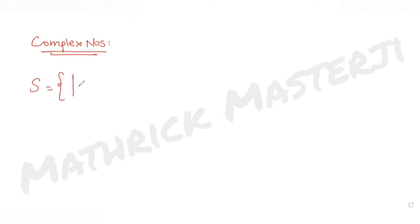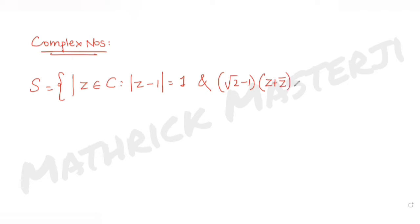Hi guys, I hope you are all doing well. Today's question is from the topic of complex numbers. The set S consists of complex numbers z such that |z - 1| = 1, and the second condition is |( √2 - 1)(z + z̄) - i(z - z̄)| = 2√2.